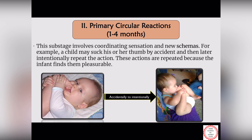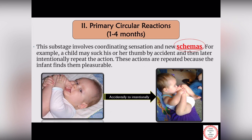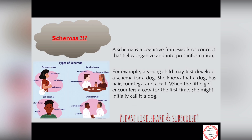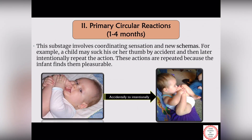The second sub-stage is primary circular reactions, between one month to four months. This focuses on doing something as part of sensation and learning something new. The word 'schema' means learning something new out of your actions. For example, when a baby first sees a dog, she develops the understanding that any animal with four legs is a dog — which is why that same baby might initially call a cow a dog. In another example, when a baby accidentally puts his thumb in his mouth and enjoys it, this pleasure leads him to repeat the action. Hence the baby has developed a new schema.